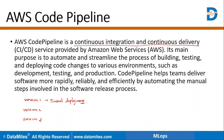So this is what automating and streamlining the process of building means. It will be used in various environments such as development, testing, and also in the production environment. We are going to use it in the production environment for machine learning models. CodePipeline helps teams deliver software more rapidly, reliably, and efficiently by automating the manual steps involved in the software release process.